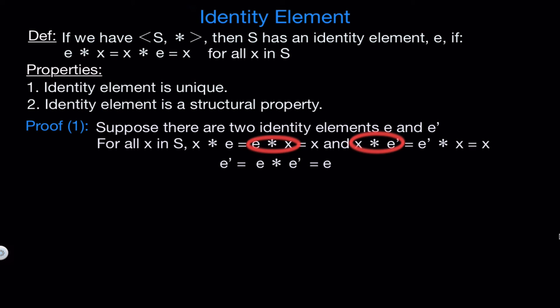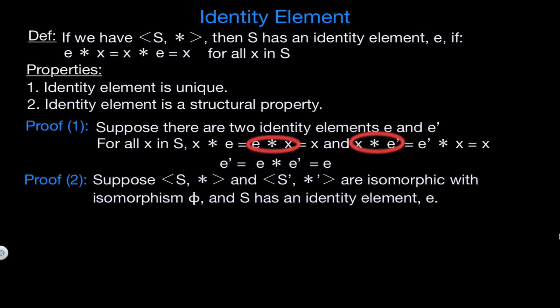Now let's prove the second property. The one that says that having an identity element is a structural property. So suppose we have two isomorphic structures, S and S', with the isomorphism phi between them, and we will assume that S has an identity element e. Then we want to show that S' must also have an identity element. So from the definition of an identity element, we know that for all x in S, e star x equals x star e which equals x.